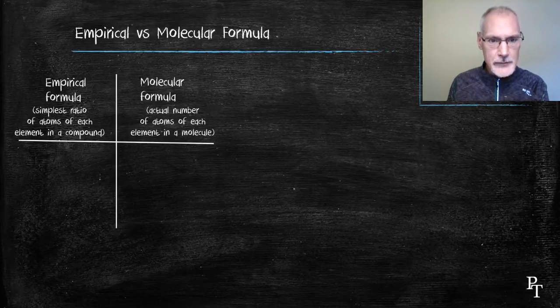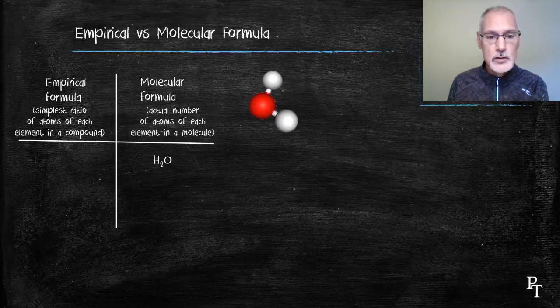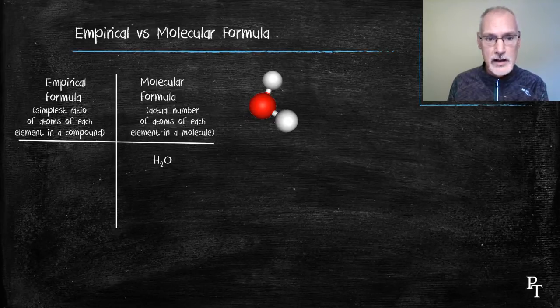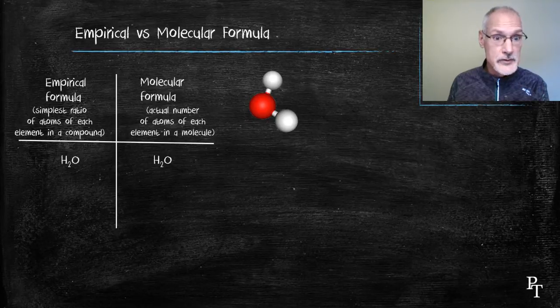Let's look at a few examples. If I start with a molecule H2O, its chemical formula indicates two parts hydrogen, one part oxygen. If I reduce that to lowest terms, I actually end up with the same formula. So in this case, there is no difference.